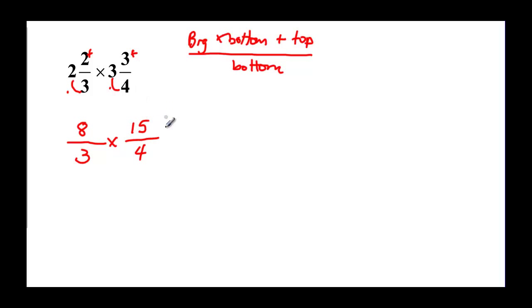Yuck! 8 times 15, I'm not even sure I know what that is, but we'll do this one the long way and the short way and see which way we like. 8 times 15, I believe it's 120, and then 3 times 4 would be 12. So it's not too bad to reduce, just wasn't fun to multiply. This is going to be 12 times 10, so I can cancel out my 12s and I'm just left with 10.